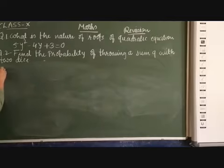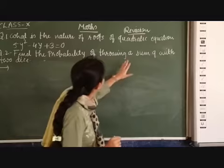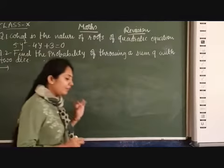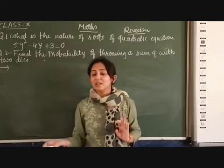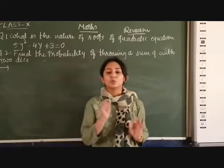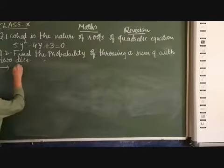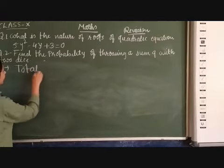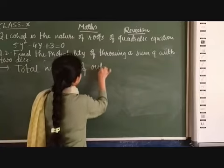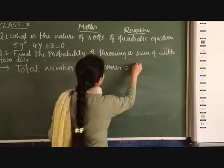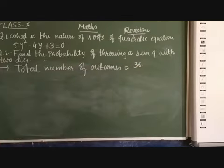See, second one. Find the probability of getting a sum with two dice. If we throw two dice, so on one dice total there are 6 faces, so on second dice also we will have 6 faces, so total number of outcomes will be 6 × 6 = 36. So let's write now, total number of outcomes = 36.